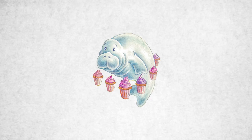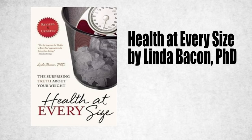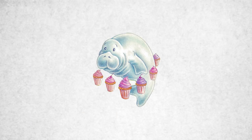Epidemiologists research fatness by comparing groups of fat people to groups of thin people and cataloging the differences. These studies can give us correlations, which show that two things may be connected, but they can't show causation — that one thing causes another. Linda Bacon gives a good example of this in Health at Every Size: balding men have been shown through epidemiology to have higher rates of heart disease than men who haven't lost their hair.